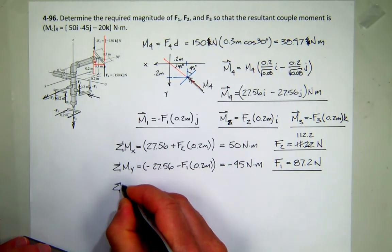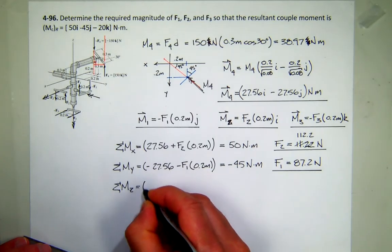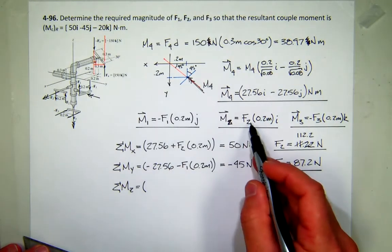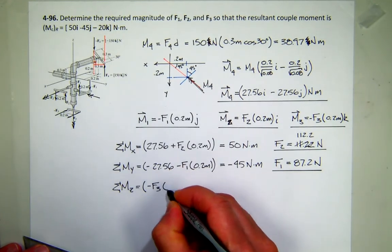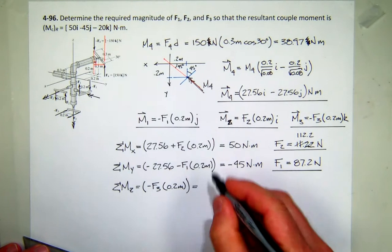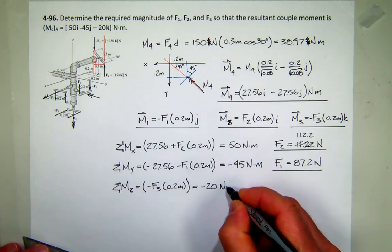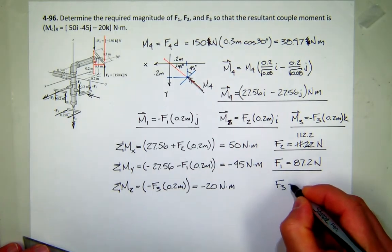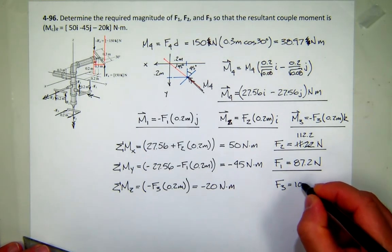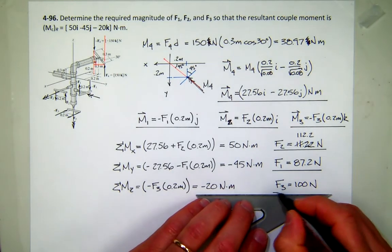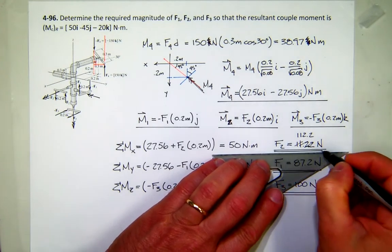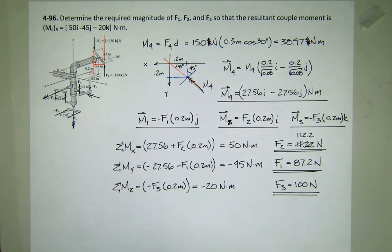And then last, we'll sum the moment components in the Z direction. M4 has no Z component. No Z, no Z. All we have is minus F3, again, times 0.2 meters. And that's going to be equal to the Z component, which is minus 20. That should give us F3. So that's what, that's just 100. So there's the results. Any questions about that?